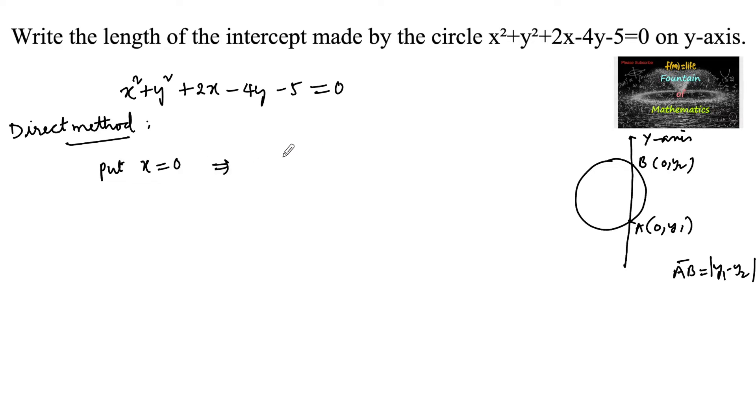In the circle equation, we will get 0 + y² + 0 - 4y - 5 = 0, which implies y² - 4y - 5 = 0. It's a quadratic equation in variable y.